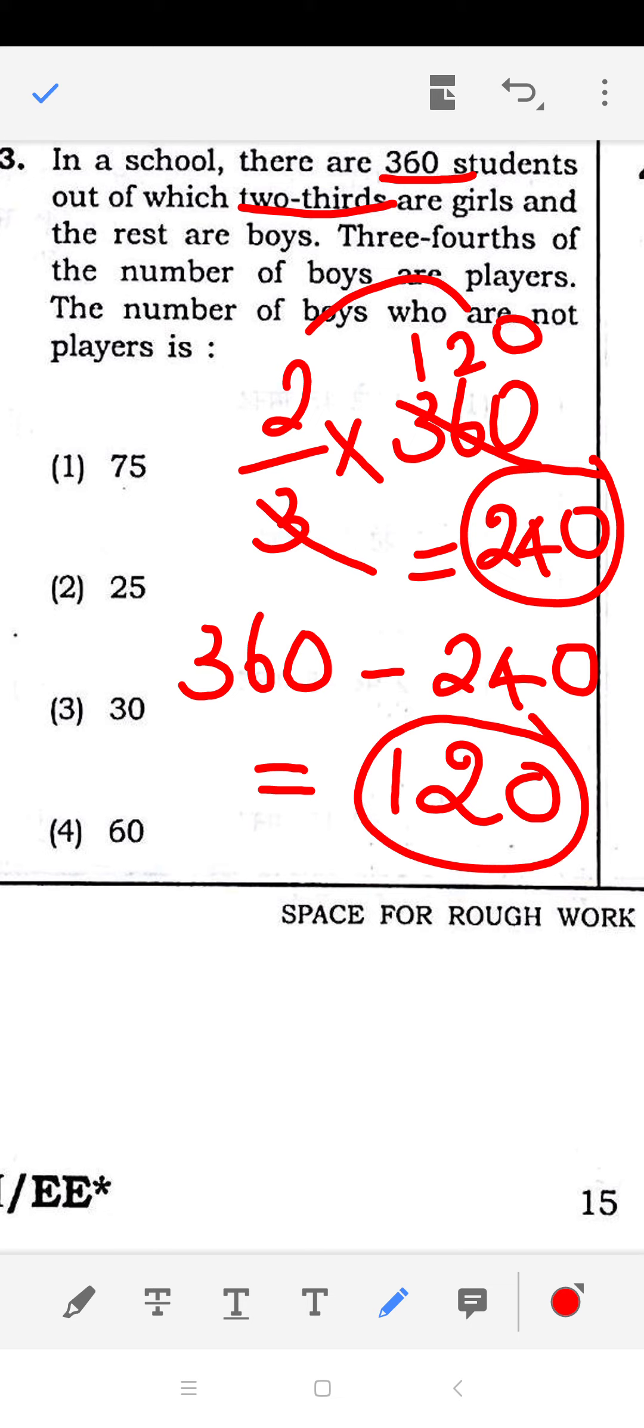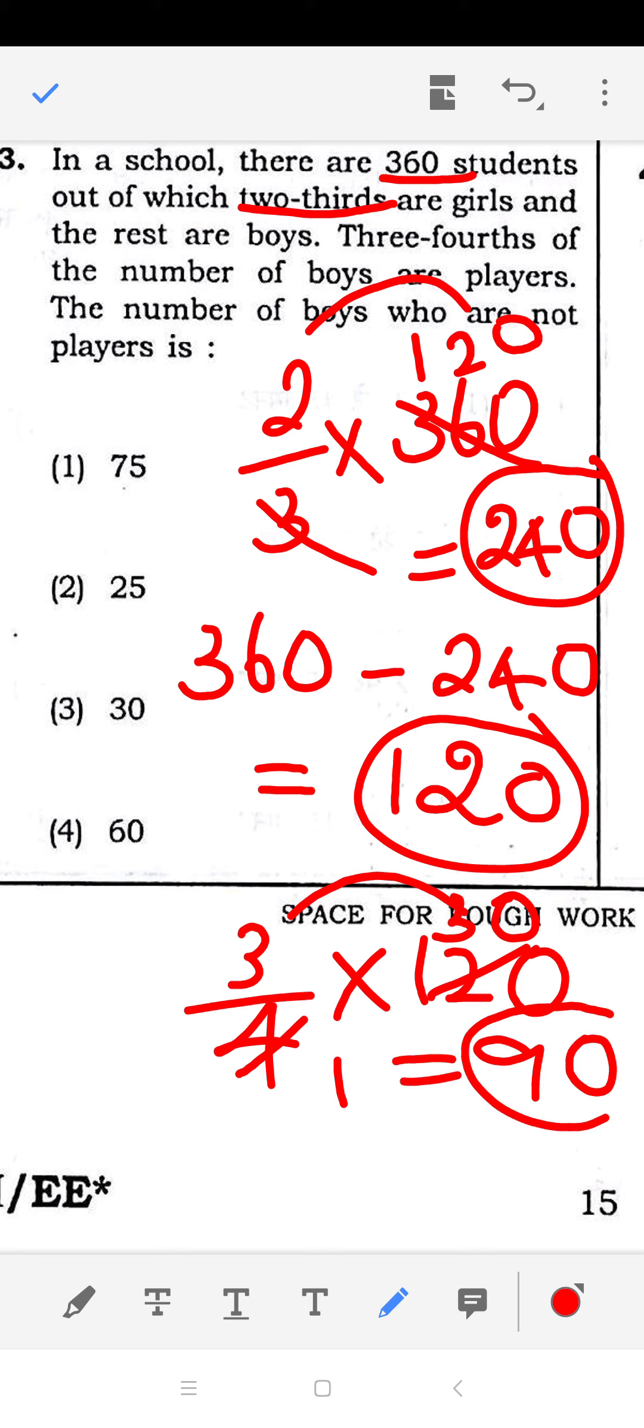Of the 120 boys, three-fourths are players. So the number of players, simplify it: 3/4 × 120 equals 3 × 30. When we multiply, we get 90. So 90 boys are players.